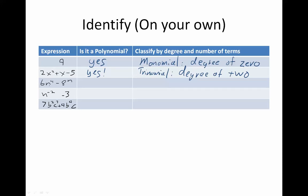What about this one? 6n to the 4th minus 8n? Is it a polynomial? No. It's not, because remember, polynomials must have whole exponents.